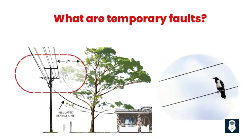On medium or high voltage lines, most trouble occurrences and faults are temporary — such as lightning, windblown tree branches or wires, birds, or rodents — and will, by their very nature, remove themselves from the electric line if the power is shut off before permanent damage occurs to the lines.